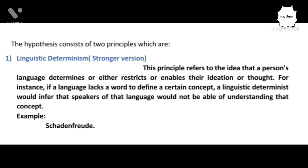Linguistic Determinism is the stronger version of the two. This proposition refers to the idea that a person's language determines, restricts, or enables their thought. For instance, if a language lacks a word to define a certain concept, a linguistic determinist would infer that speakers of that language would not be able to understand that concept. Conversely, if a person speaks a language that has multiple definitions for one concept, a linguistic determinist would argue that he or she must have a better understanding of what's being defined.